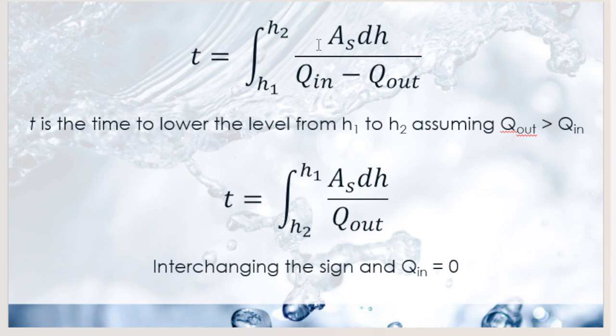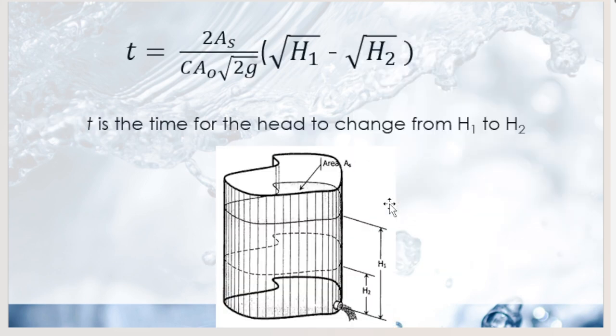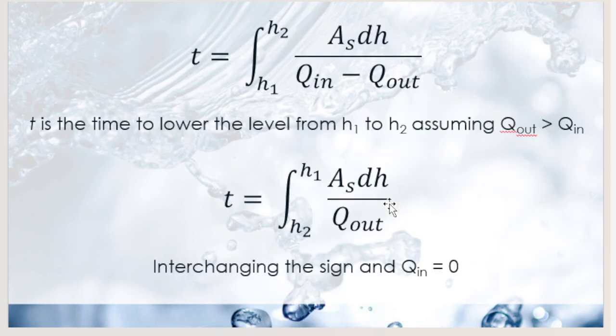If Q-in equals zero — meaning nothing is flowing in, like there's no faucet — we reverse the sign, and the limits become from H2 to H1. A-sub-s here is a variable and must be expressed in terms of h, which is why it's multiplied by dh.